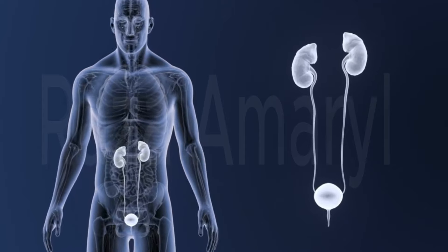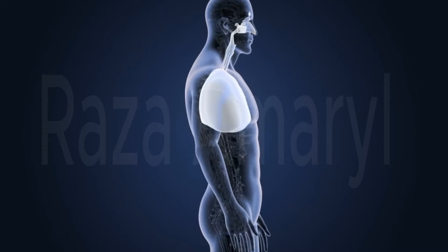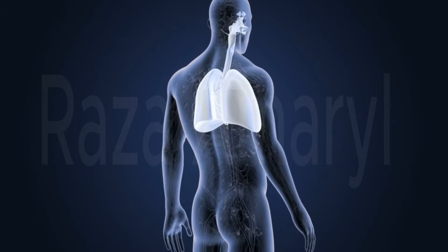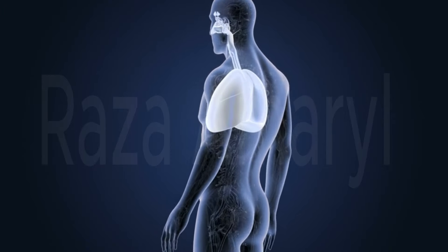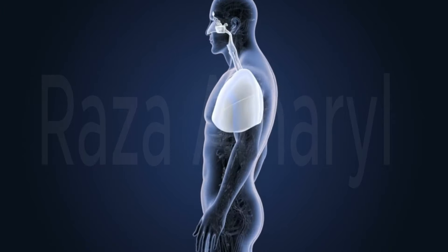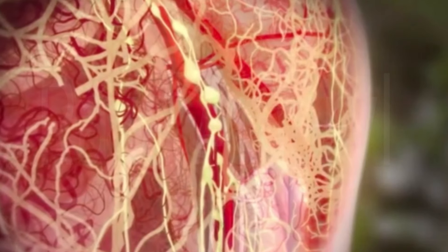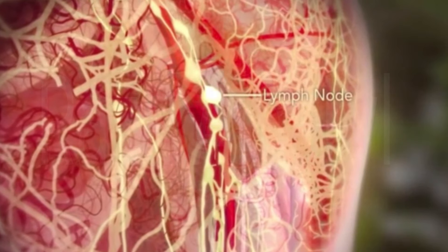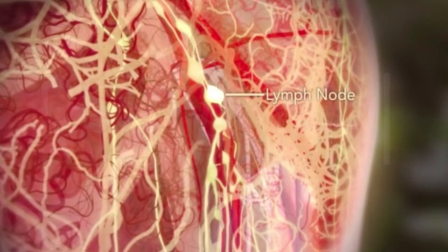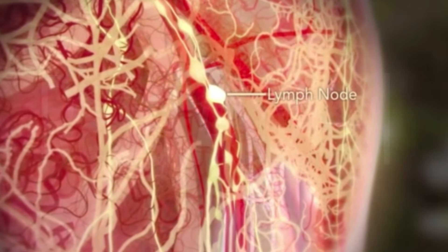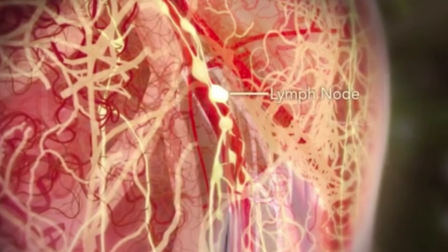Organs: Organs are structures composed of different tissues that work together to perform specific functions. Examples include the heart, lungs, liver, and brain. Tissues: Tissues are groups of cells with similar structures and functions. The four main types of tissues in the body are epithelial, connective, muscle, and nervous tissue.